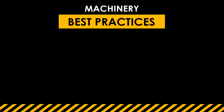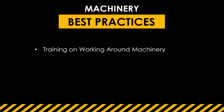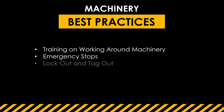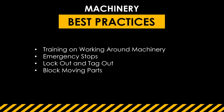Some best practices for avoiding machinery fatalities include making sure everyone is trained on working on or around machinery, ensuring everyone knows where emergency stops are and how to use them. Only work on machinery that is locked out and tagged out. Make sure moving machine parts are blocked if you're going to be working on them, and if at all possible, work with a buddy.